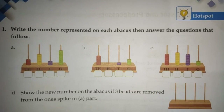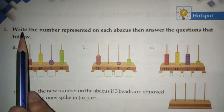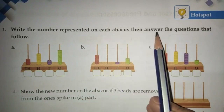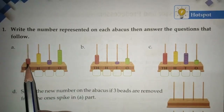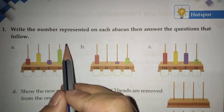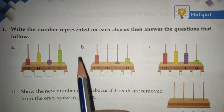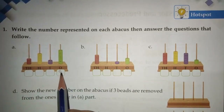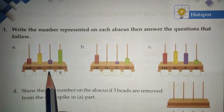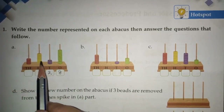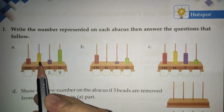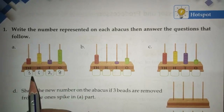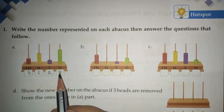Now page seven. Question one shows numbers represented on an abacus — write the number and answer the questions. We count from the right, starting at the ones position. For a: there are 8 beads in ones, 2 in tens, 6 in hundreds, and 3 in thousands — so the number is three thousand six hundred and twenty-eight. For b: count the beads — 3 in ones, 1 in tens, 0 in hundreds, and 5 in thousands — so the number is five thousand and thirteen.